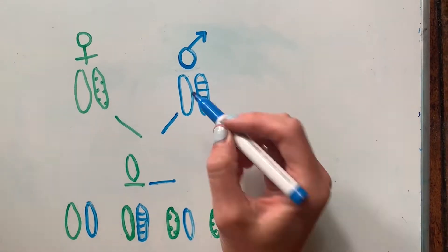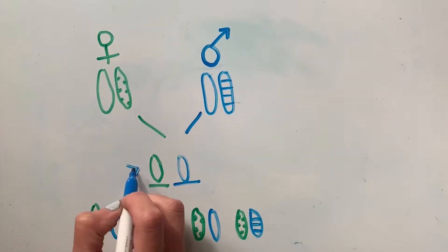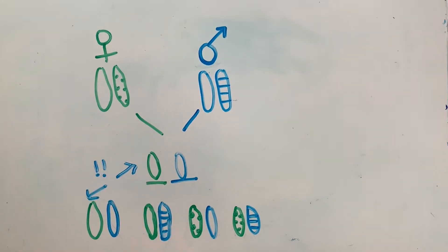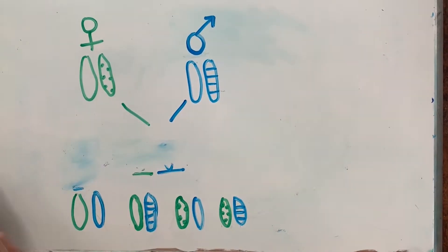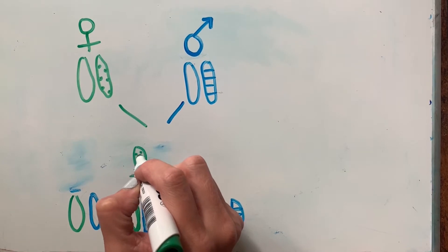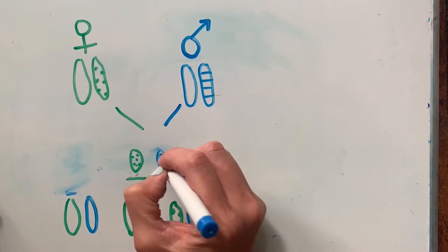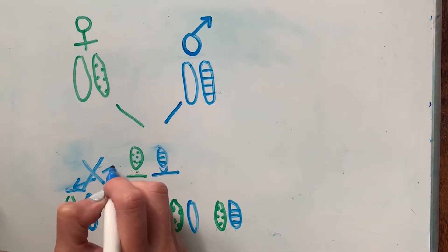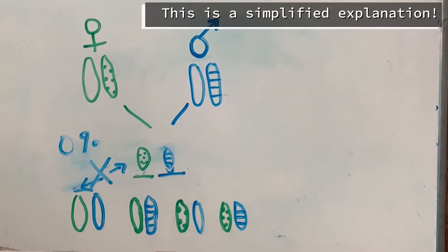Some siblings share 100% of their genes — think twins — and some siblings got totally different halves from mom and from dad and share 0%. But at the end of the day, if we average out all those possibilities, we humans share about half of our genes with our siblings.